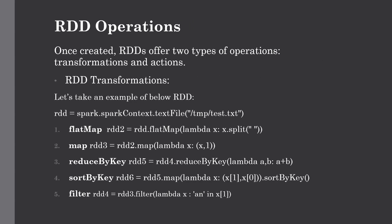Now let's discuss some RDD operations. Once we create an RDD it has two major operations — the first one is transformation and the second one is actions. Transformation is nothing but shaping your dataset, which can include operations such as mapping, filtering, joining, and transcoding the values in your dataset. An important thing to remember is that transformations on a dataset are lazy — meaning any transformation is only executed when an action on the dataset is called. This helps Spark optimize execution.